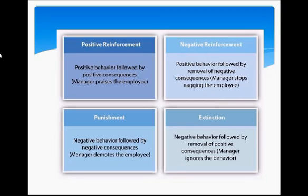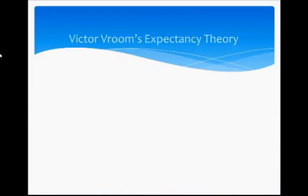Negative reinforcement means positive behavior followed by removal of negative consequences — for example, the manager stops nagging the employee, and in this case the employee will also repeat that positive behavior. Punishment means negative behavior followed by negative consequences — for example, the manager demotes the employee, so the employee will stop that behavior. Extinction means negative behavior followed by removal of positive consequences — for example, the manager ignores the behavior, and in this case the employee will also stop that negative behavior.